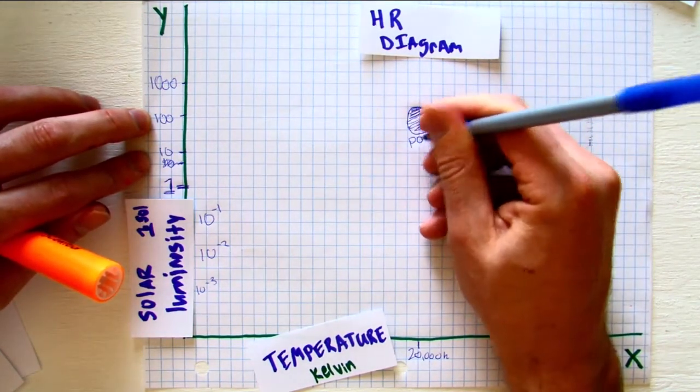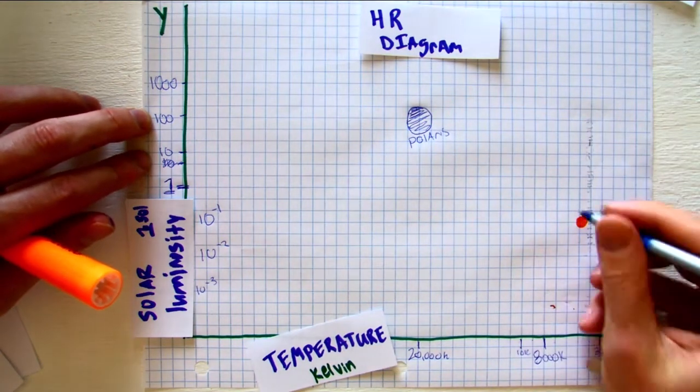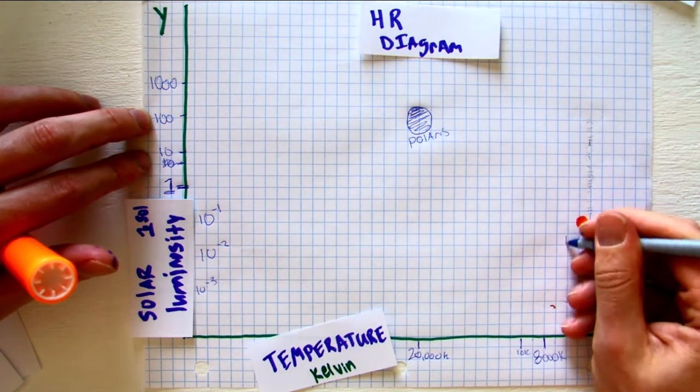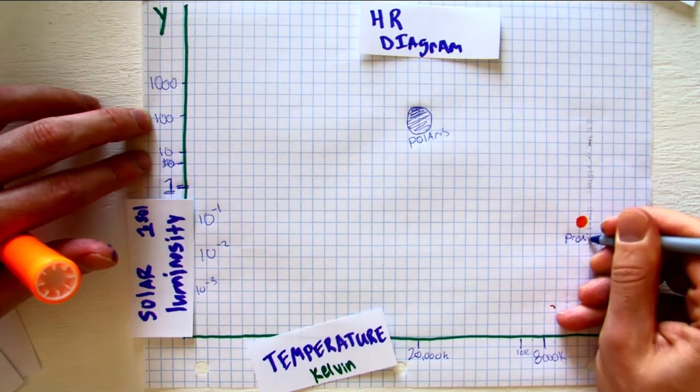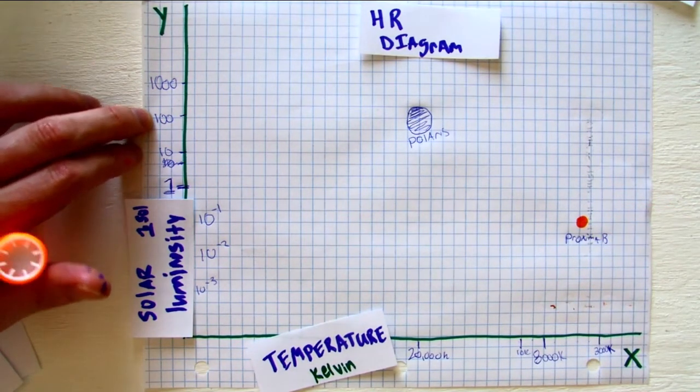And maybe this is Polaris. It's not, but maybe that's it, and I write the name in. And then maybe this one is Proxima B. It's not, but you get the idea. And you just write the name.